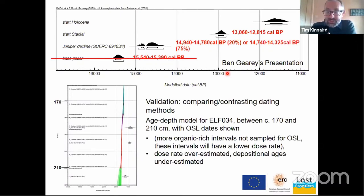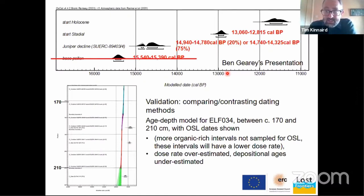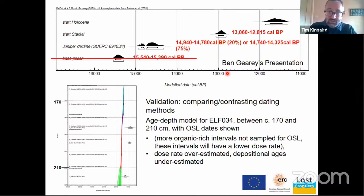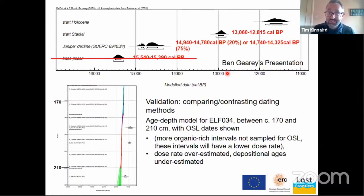What's also great about having the two chronological methods is we can compare and contrast. With reference to 1A, the radiocarbon date was residual. The OSL dates from 34 were the opposite - they underestimated the correct depositional age. The reason is that when OSL dating, I sample the mineral-rich horizons and don't tend to sample the organic-rich horizons. Those organic-rich horizons will have a lower dose rate than the horizons I've sampled, so because all my dose rate measurements are taken on mineral-rich horizons, I've overestimated the dose rates, resulting in an underestimation in age. Because we have such a large dataset, we can apply these methods across the cores and be confident in our dates.